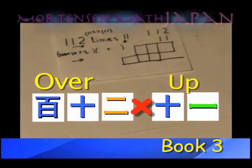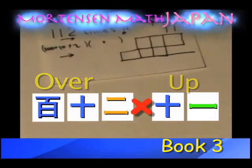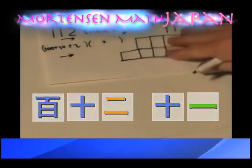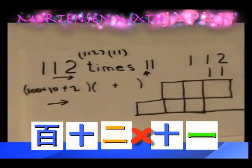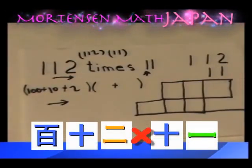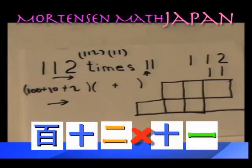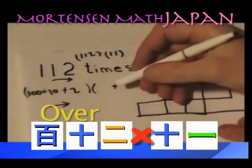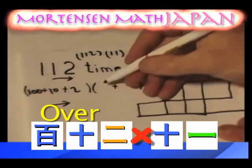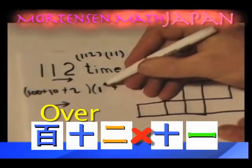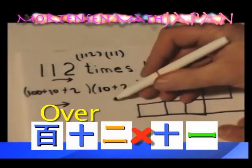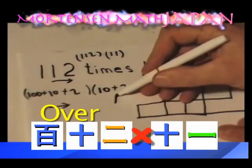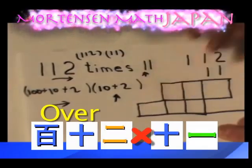Let's look at that a little closer. One hundred plus ten plus two over, and ten plus two up.